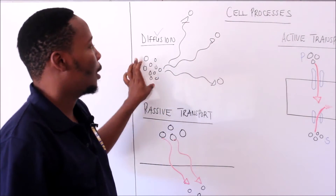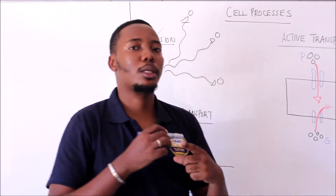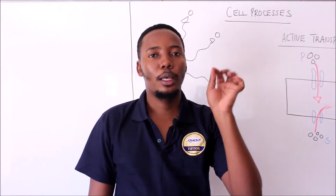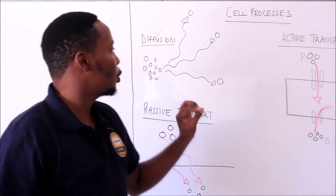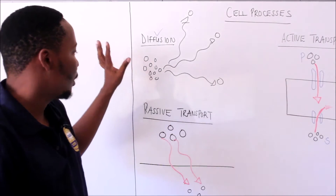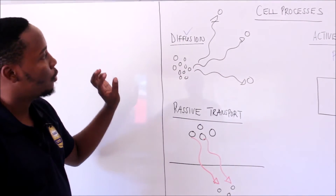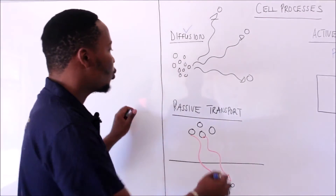A light molecule moves very fast from one area to another because it is easy to carry compared to a large molecule. That's all about diffusion. Let's move to the other form of transport.